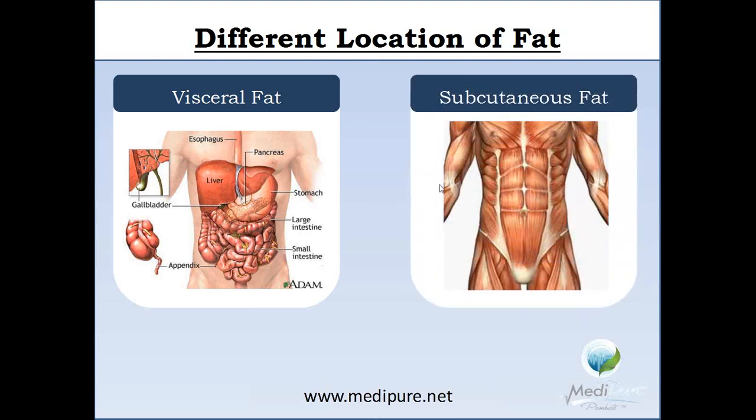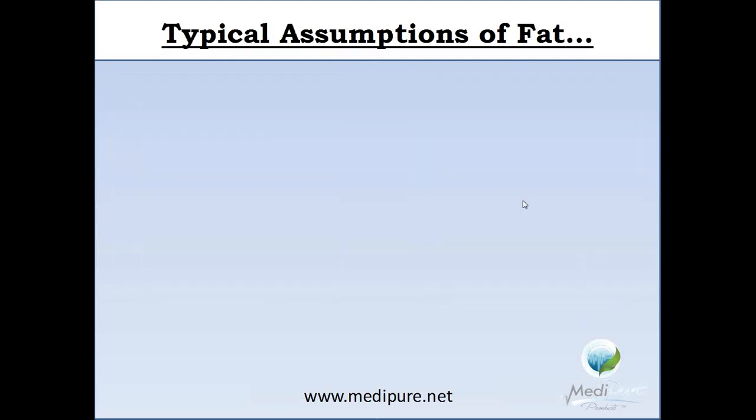We then have subcutaneous fat, which is the fat that lies outside of the muscles. So you can think, for example, in the abdominal area — fat that might be between the skin and the muscle itself.